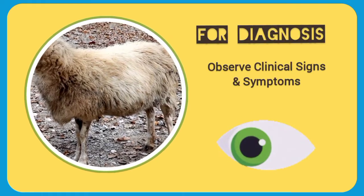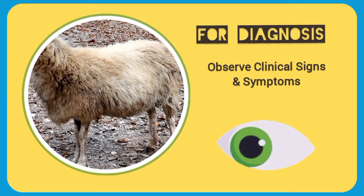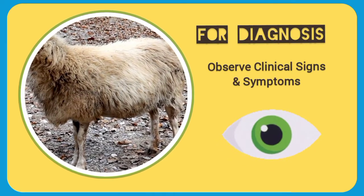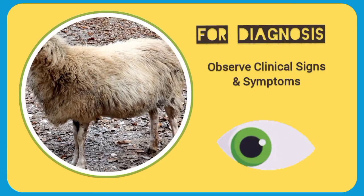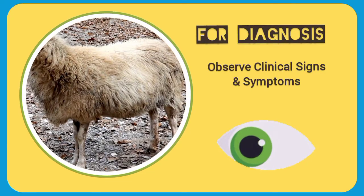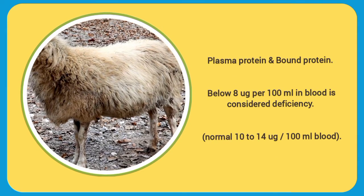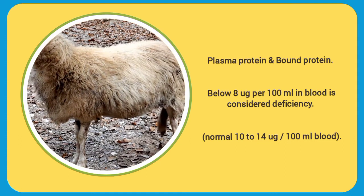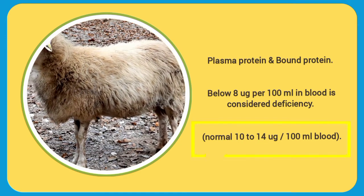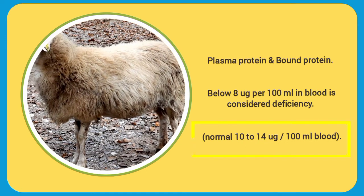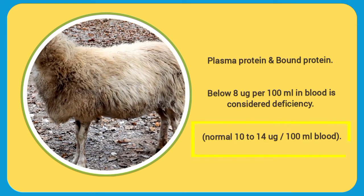For diagnosis, we observe clinical signs and clinical pathology. Plasma protein-bound iodine below 8 micrograms per 100 milliliters in blood is considered deficiency. Normal range is 10 to 14 micrograms per 100 milliliters of blood.